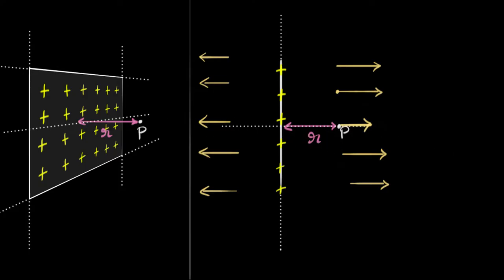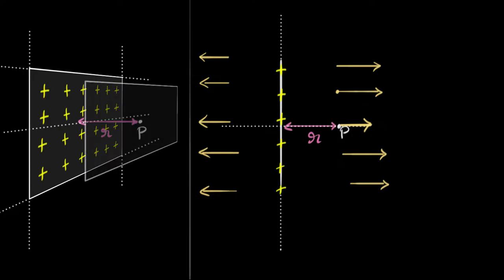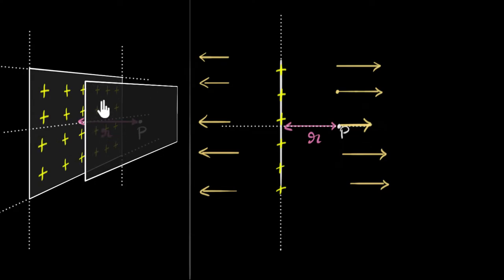That's our symmetry argument. If you take a plane parallel to the given sheet, anywhere on that plane the distance from the sheet is the same. So everywhere on that parallel plane, the electric field must be the same magnitude. Any plane you take parallel to the sheet, the electric field must be the same. That's our symmetry argument.